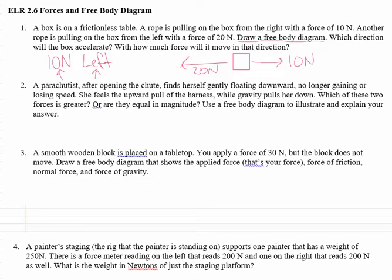Number two: a parachutist opens the chute, finds herself gently floating downward, no longer gaining or losing speed. She feels the upward pull of her harness while gravity pulls her down. The key here is that you are no longer gaining or losing speed, which means that things are balanced. If you have an object that is balanced you have an equal amount of up and down forces, and that means the object is still moving, it's just not accelerating. Balanced things do not accelerate.